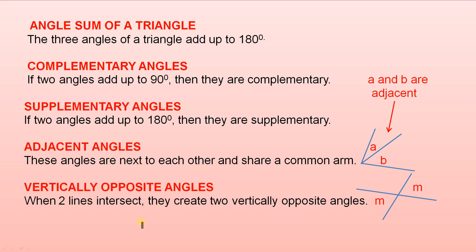And finally, vertically opposite angles. When two lines intersect, they create two vertically opposite angles. Here are two angles here, M and M, and the two vertically opposite angles that are created are equal. So please remember that.